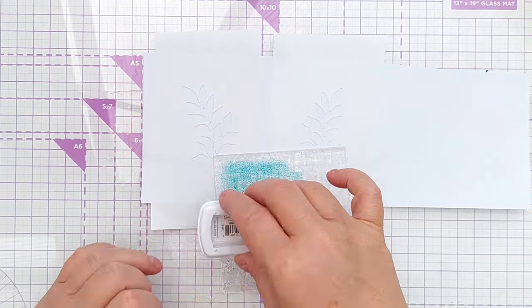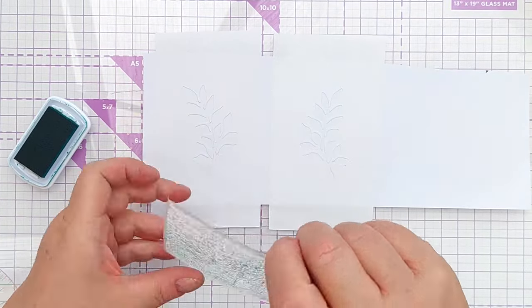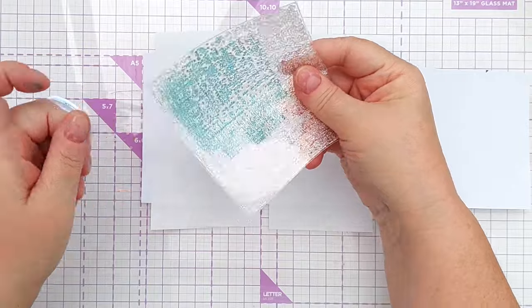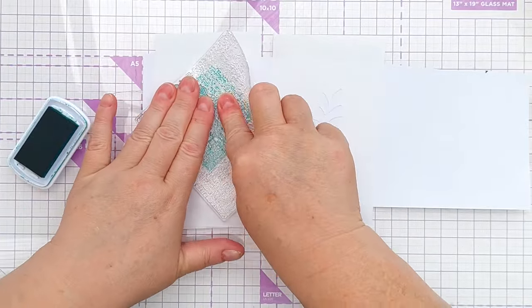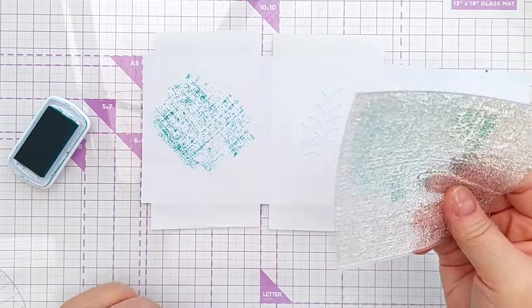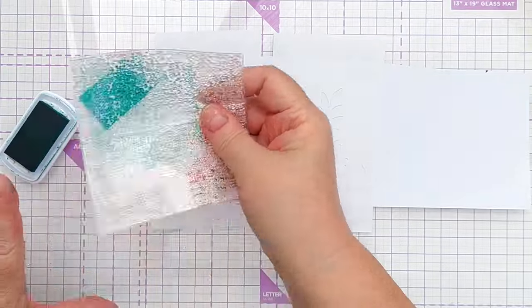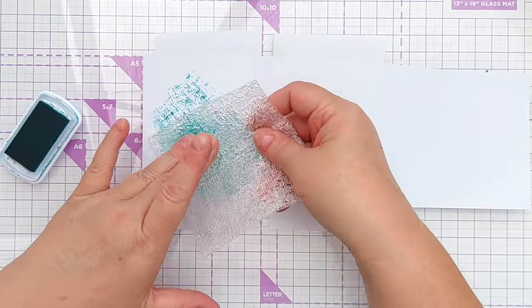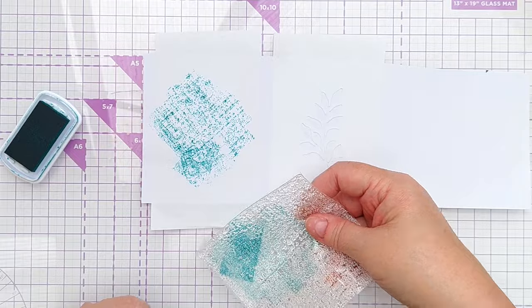I didn't put the stamp on a stamping block because what I was aiming for was just to create a leafy branchy shape with texture. I wasn't looking for it to be a linen texture particularly, just textural, not solid.